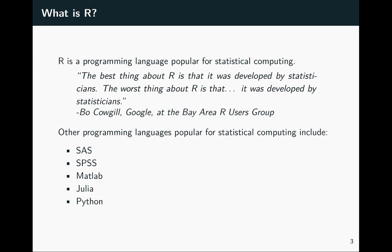I've put in here a quote: 'The best thing about R is that it was developed by statisticians; the worst thing about R is that it was developed by statisticians.' This rings true a little bit — because it was developed by statisticians it is very attuned to the needs of data analysis and statistics and has wonderful algorithms for a lot of what you might want to do. But it does have some characteristics that make it a bit different, especially from other languages you might be more familiar with.